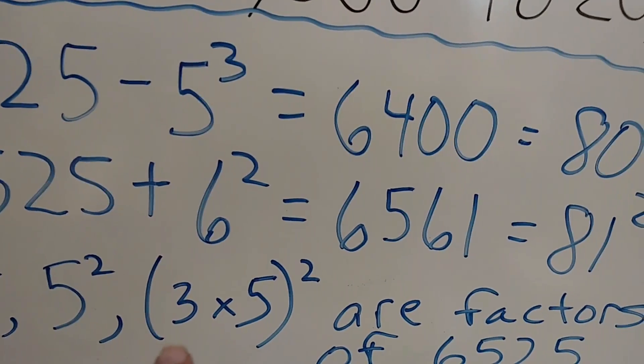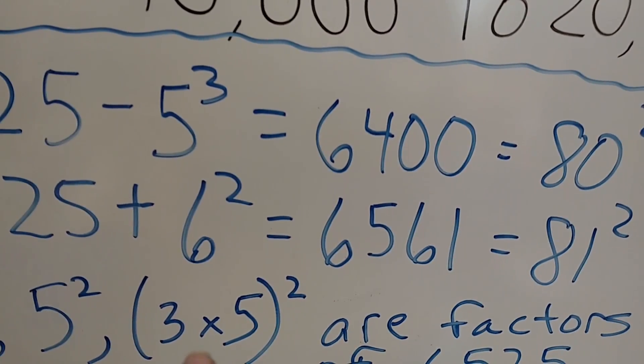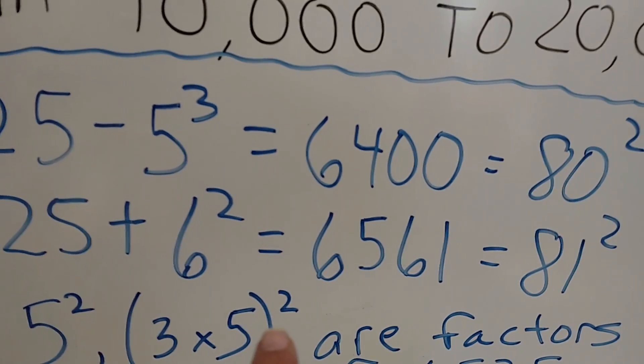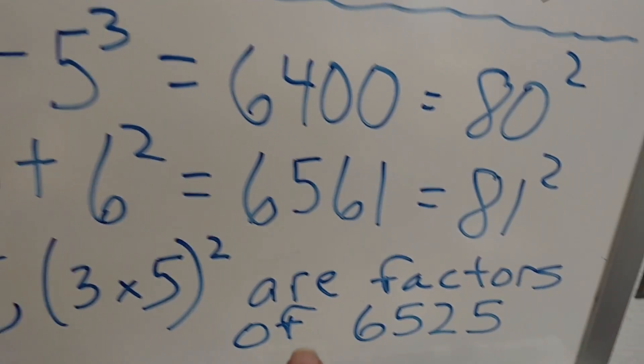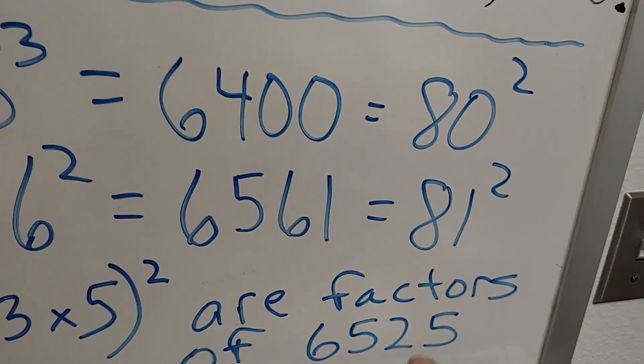And if I take the product of 3 and 5, which is 15, and square that, we get 225. 225 is a factor of 6,525.